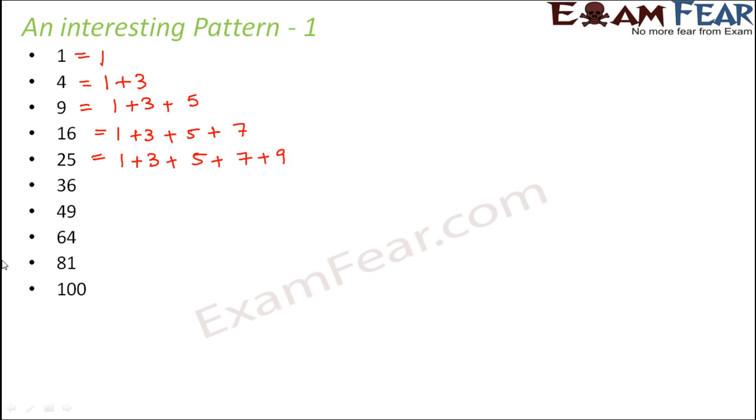Now do you notice any pattern by now? Well, what we see is every time as the number increases, as the value of the perfect square is increasing, we see that it is sum of odd numbers, like 1 is the smallest odd number, after that you have 3, then you have 5, then 7, then 9. So can you guess how can you express 36? So 36 can be written as 1 plus 3 plus 5 plus 7 plus 9 plus 11. 49 can be written as 1 plus 3 plus 5 plus 7 plus 9 plus 11 plus 13.